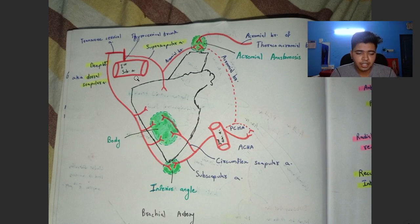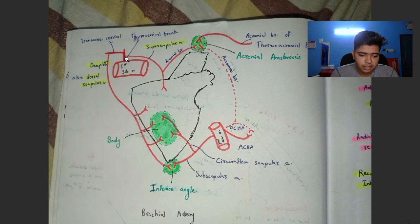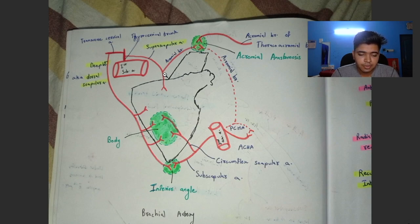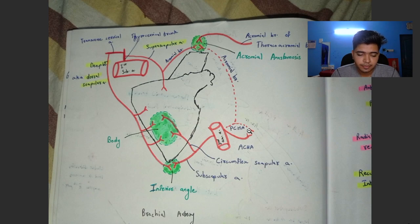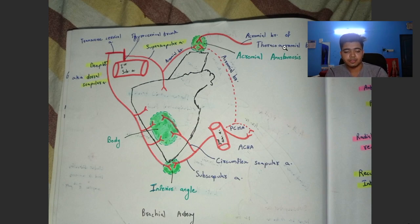The first part of the subclavian artery gives off a main artery known as the thyrocervical trunk, and from this thyrocervical trunk comes the suprascapular artery. The suprascapular artery is named because it is above the scapular region, and from it an acromial branch appears. That acromial branch anastomoses with the posterior circumflex humeral artery. The posterior circumflex humeral artery gives off an acromial branch, and from the second part of the axillary artery comes the acromial branch of the thoracoacromial trunk, which together anastomose.